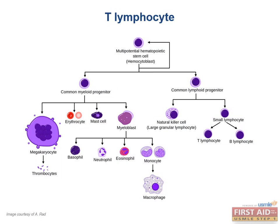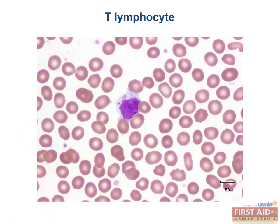Cytotoxic T cells have T cell receptors as well as CD8 coreceptors. These CD8 coreceptors interact with MHC class I receptors found on nucleated cells and function mainly for viral immunity. Immature T cells also differentiate into T helper cells, and the key thing to remember is that the CD4 coreceptor interacts with MHC class II receptors, which are found on antigen presenting cells. It is also very important for your exam that these CD4 T helper cells are the target of attack of the HIV virus.